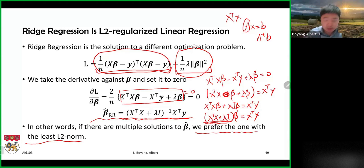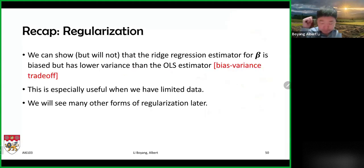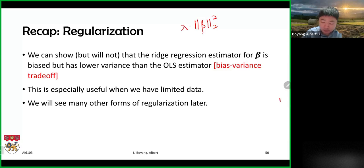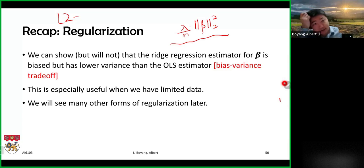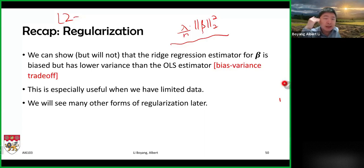We prefer the solution with the least L2 norm among all possible betas. When we add the model parameter norm — multiplied by a coefficient lambda — to the loss function, this is known as L2 regularization. This means that in addition to whatever loss we have, we also want to find a solution with the smallest norm.